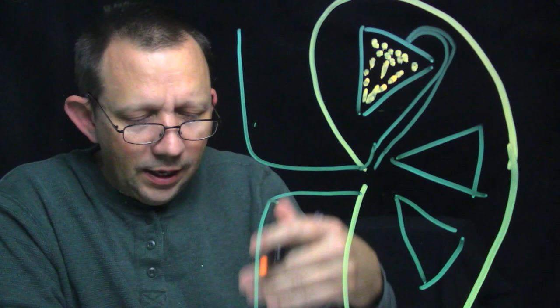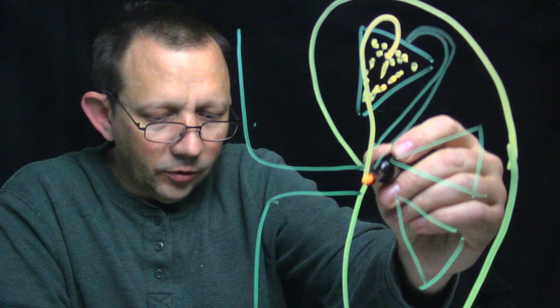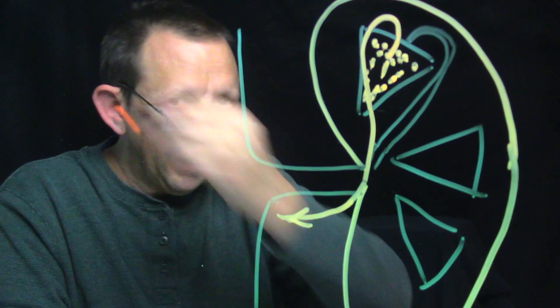The peritubular capillaries go through along the convoluted tubules and the loop of Henle. Eventually the peritubular capillaries become interlobar veins and then arcuate veins, which loop around again. Then they become the interlobar veins — just like the interlobar arteries — and it becomes the renal vein.